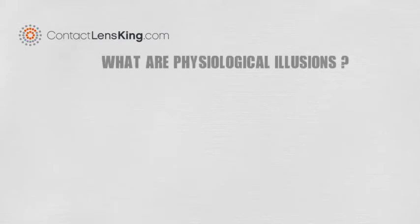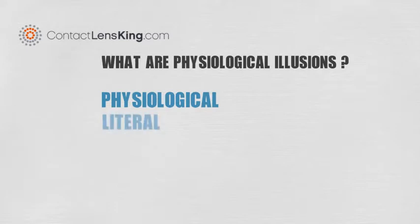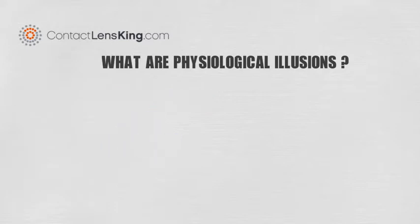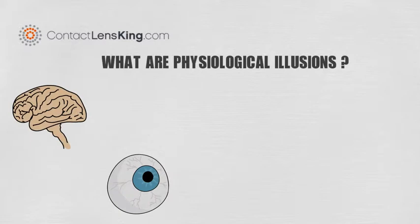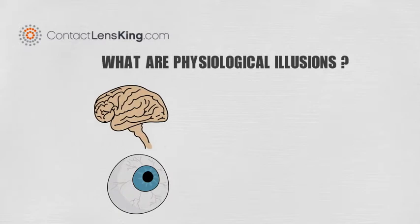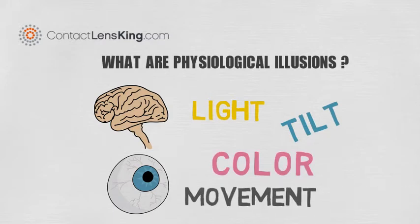Physiological Optical Illusions. What are physiological illusions? Physiological illusions are one of three types of illusions. This type is created when the eyes and brain experience excessive stimulation from various attributes, such as light, tilt, color, and movement.